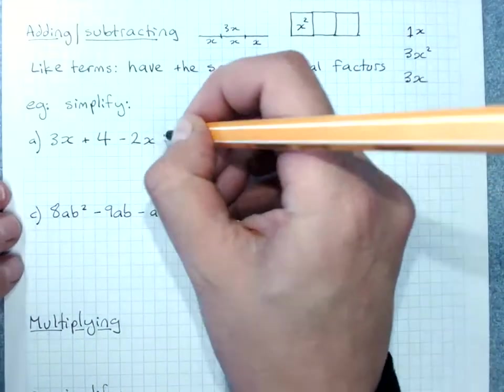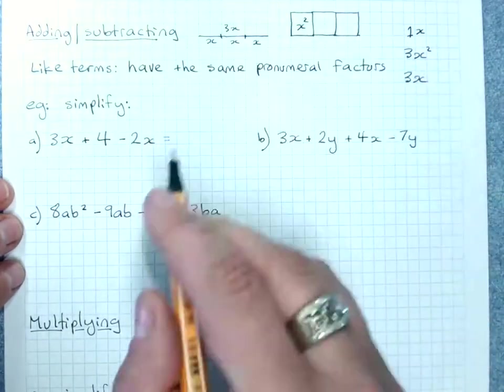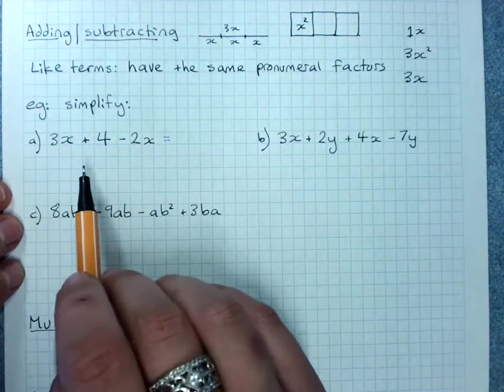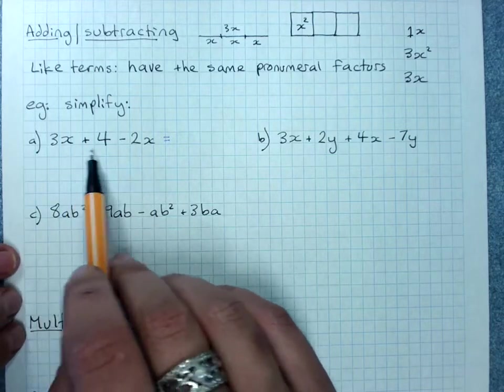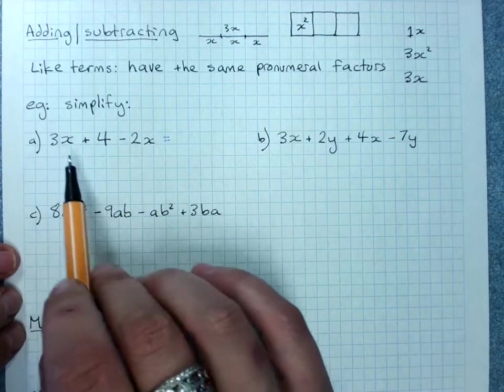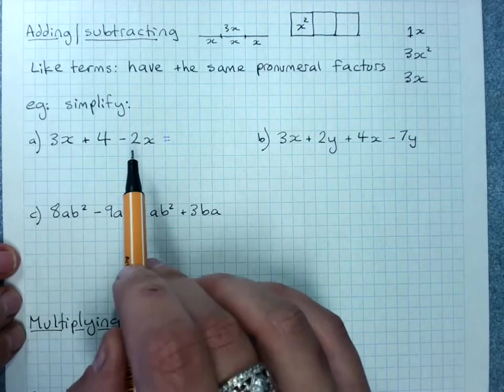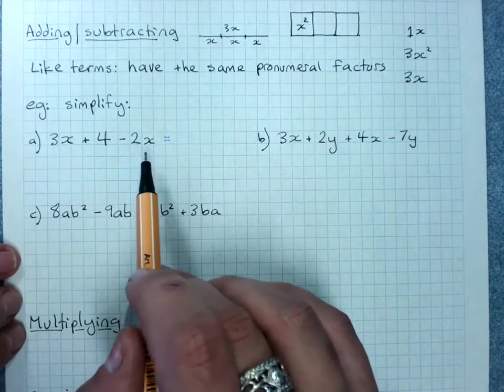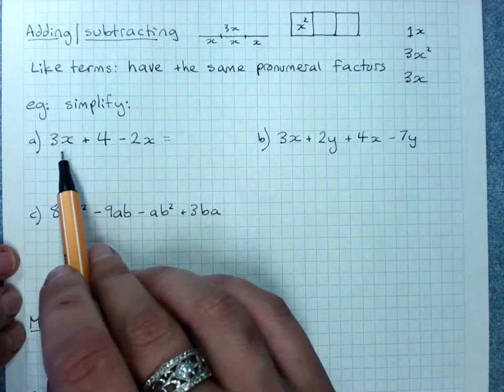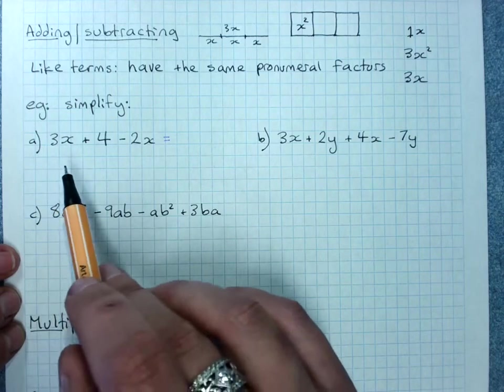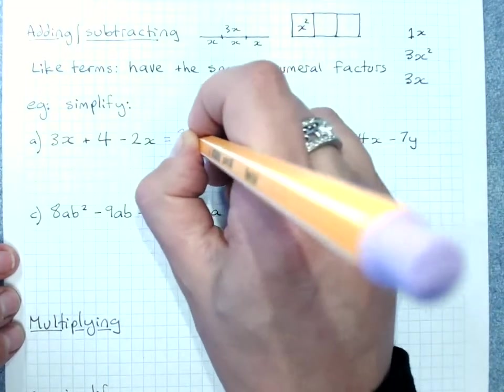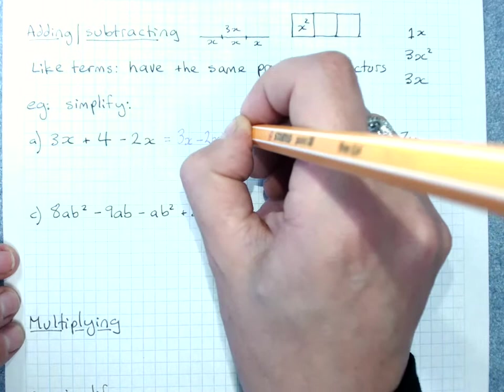You can rearrange when you're adding and subtracting as long as you keep the signs with the correct terms. So if you're ever stuck at all, rearrange so all like terms go together, and if you want so that it's, you know, 3x minus 2x is easier than negative 2x plus 3x. Put your larger or more positive values first.